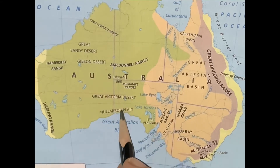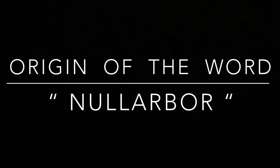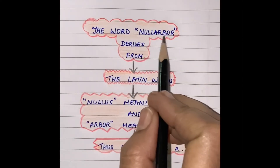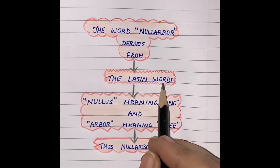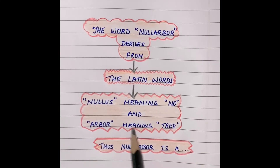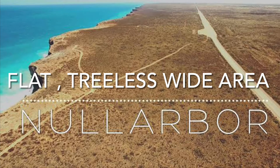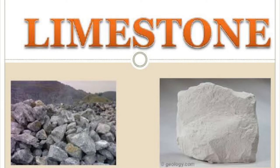From the map it's clear that it lies to the south of all the deserts and north of the Great Australian Bight. The word Nullarbor derives from the two Latin words 'nullus' meaning no and 'arbor' meaning tree. Thus the term Nullarbor refers to a flat, treeless wide area which is made up of limestone rocks.